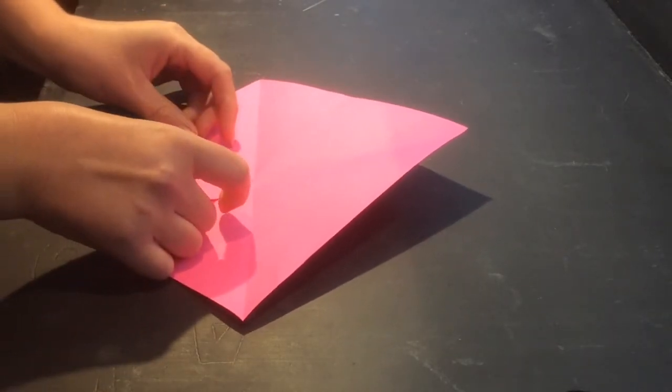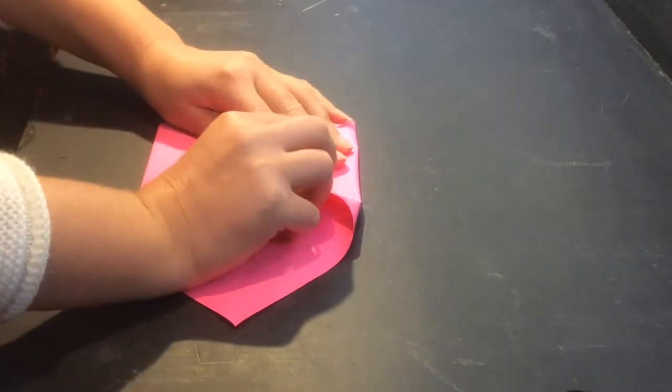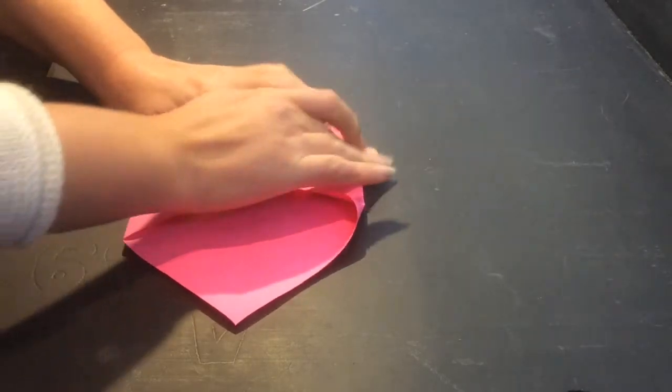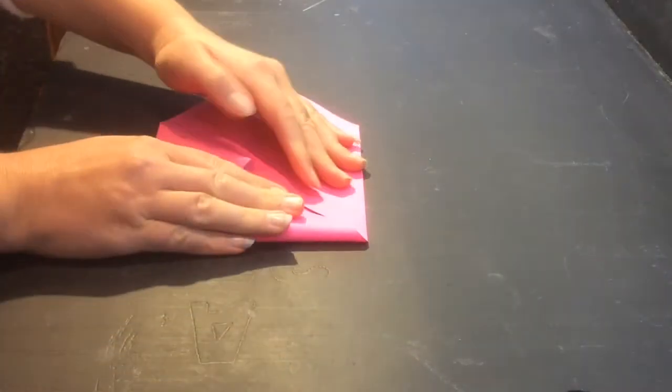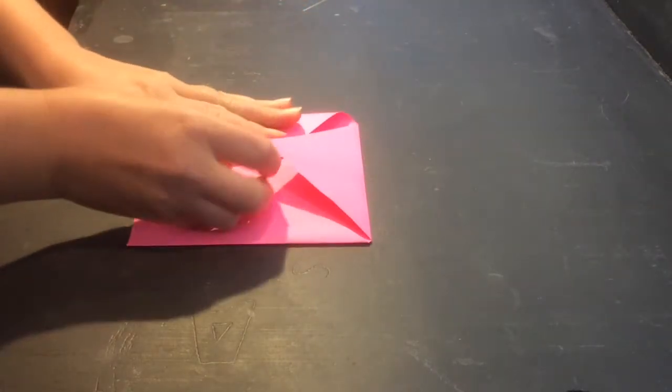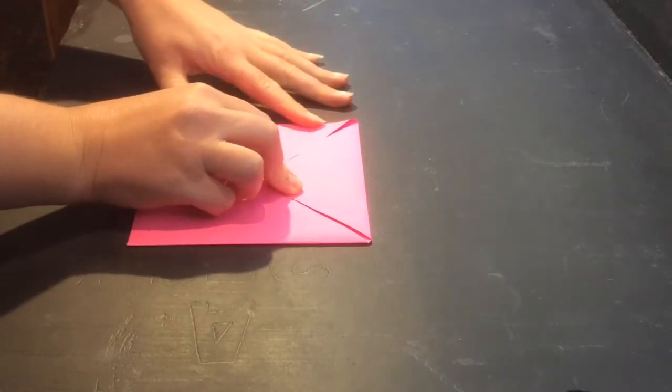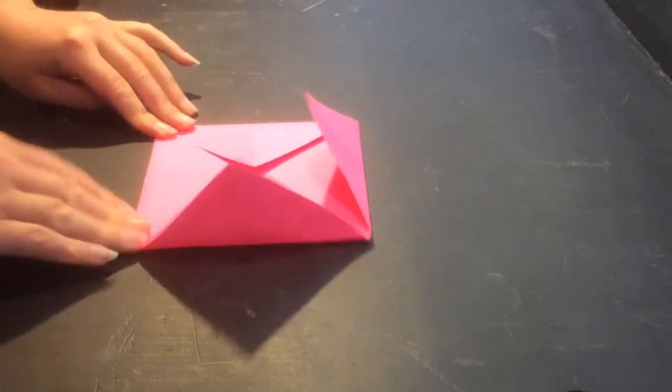When you open it up you can see the nice cross there through the creases. We're going to take each corner and we're going to fold it through to the center point and just fold it over there. We're going to do this all the way around.